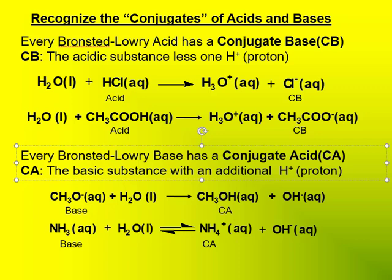Every Bronsted-Lowry acid has something called a conjugate base, abbreviated capital C, capital B. One way to help identify a conjugate base is that it is the acidic substance less one hydrogen ion.